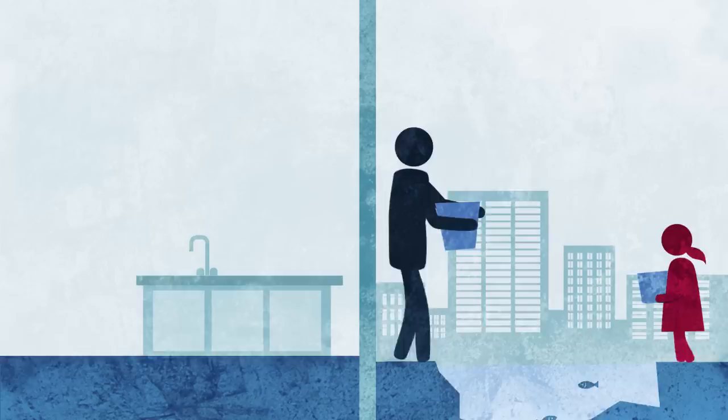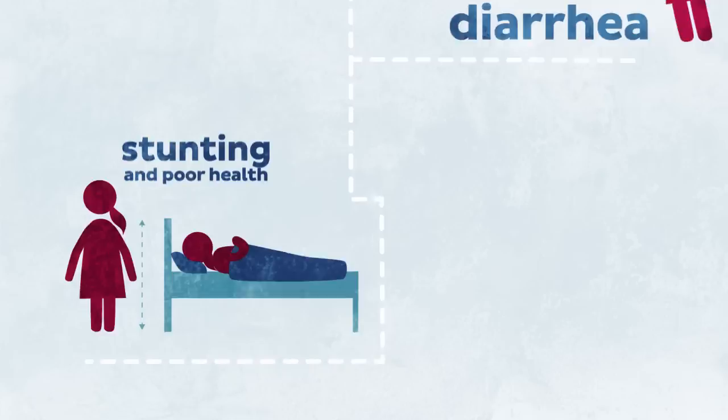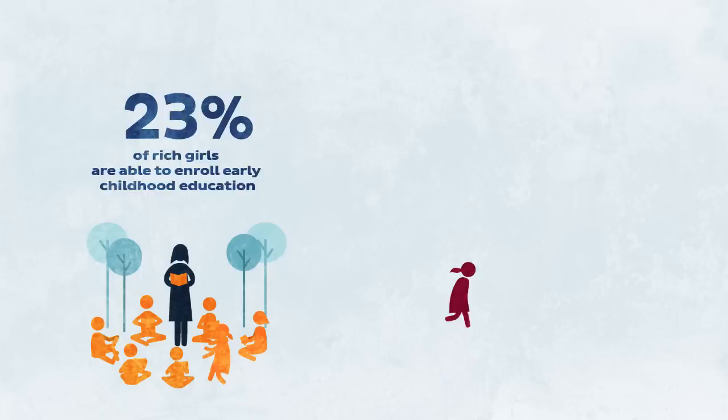Dewi grew up in a house with clean, running water and a toilet. Putri's family couldn't afford a toilet. Because she had to defecate in the open, she got diarrhea frequently. This made her growth even more stunted, while Dewi, who almost never had diarrhea, grew tall.